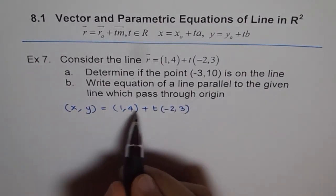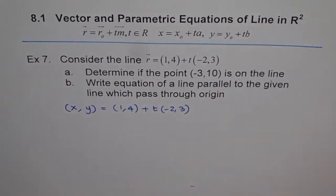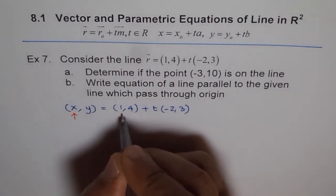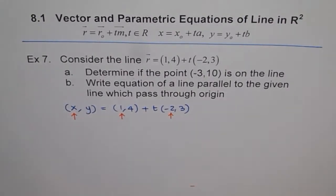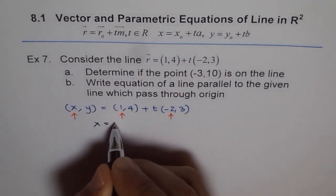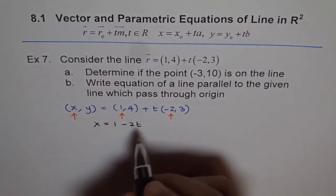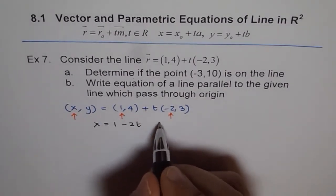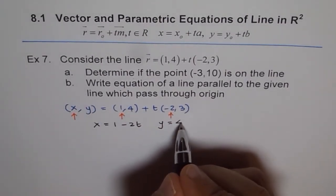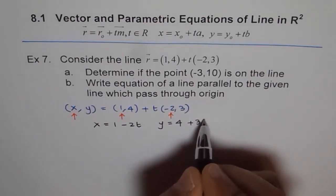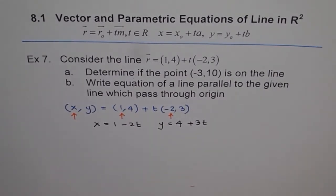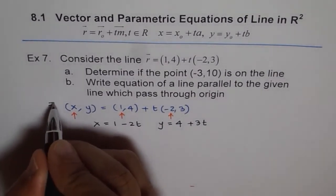From here, the x components give us the fixed point and the direction numbers A and B, where T is variable. So we can write x = 1 - 2T for x, and for y we can write y = 4 + 3T. We split it into these two parametric equations, and they still represent the same equation R.